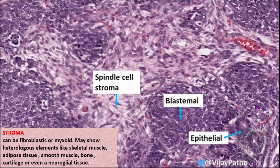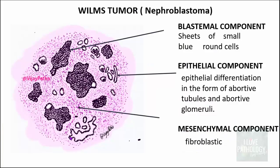The third component is the stromal or mesenchymal component, which can be fibroblastic spindle cell stroma or myxoid stroma. The stromal component may show heterologous elements such as skeletal muscle, adipose tissue, smooth muscle, bone, cartilage, or even neuroglial tissue. For your illustration, draw all three components: blastemal (sheets of small round blue cells), epithelial (abortive tubules and abortive glomeruli without basement membrane), and mesenchymal/stromal (fibroblastic spindle cell stroma). That completes Wilms tumor.